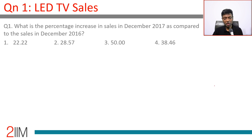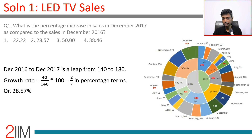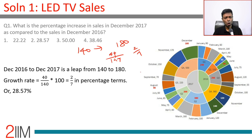What is the percentage increase in sales in December 2017 compared to December 2016? December 2017 is 180 and December 2016 is 140. The increase is 40 on a base of 140, which is 2 by 7. Since 1 by 7 is 14.28%, 2 by 7 is 28.57%.